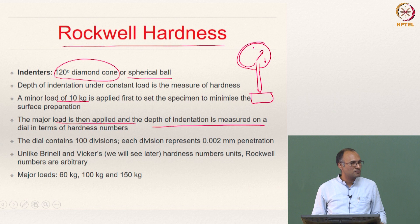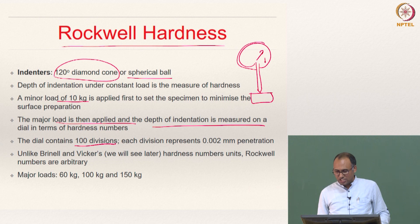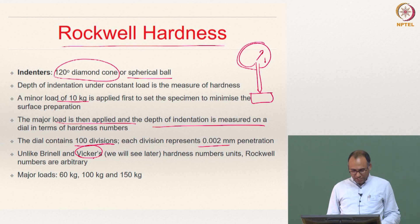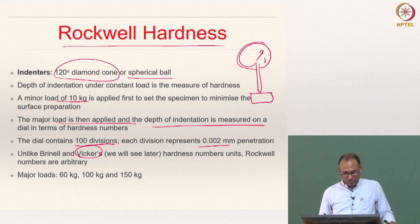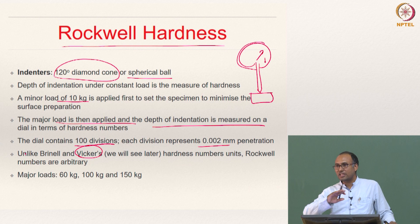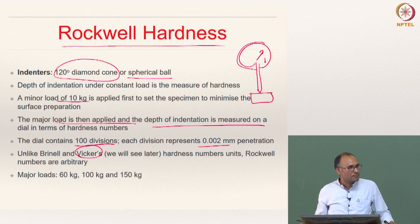The dial contains 100 divisions, and each division represents 0.002 mm penetration. Unlike Brinell and Vickers hardness, Rockwell hardness numbers do not have a unit. The unit of Brinell hardness number is kgf per mm², whereas the Rockwell hardness number is just a number — they are arbitrary with no unit. You will not report 0.002 mm, but rather what number the dial is representing on its scale.